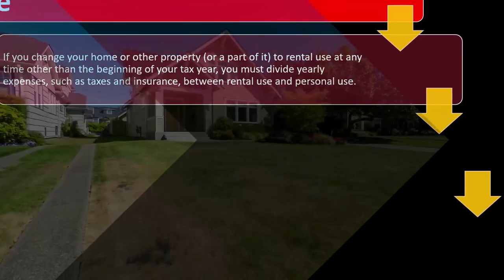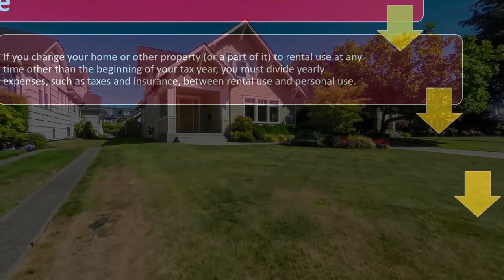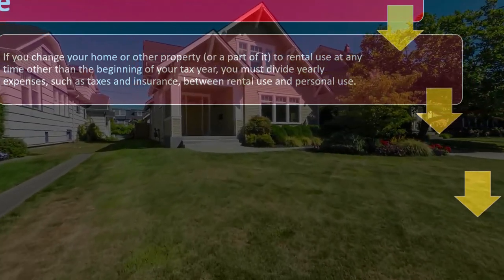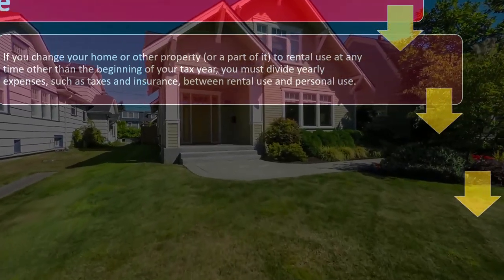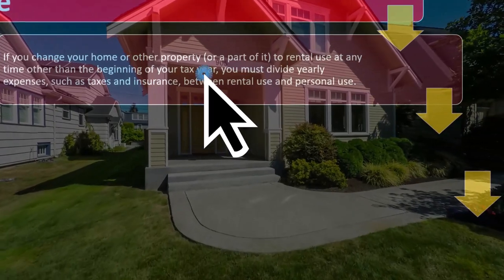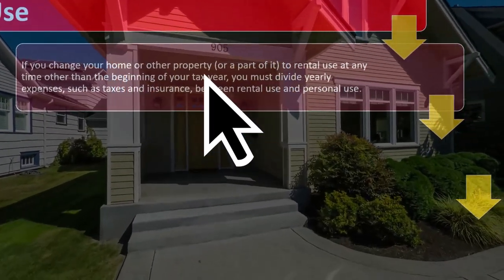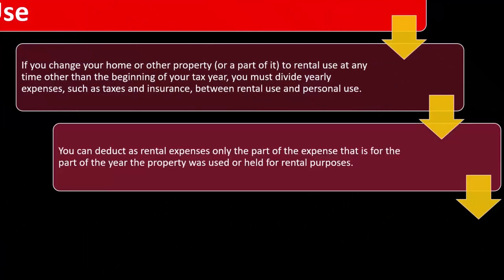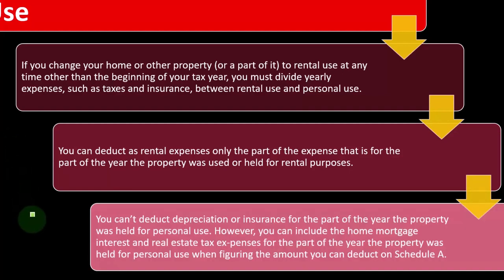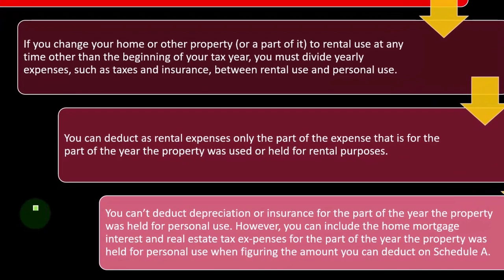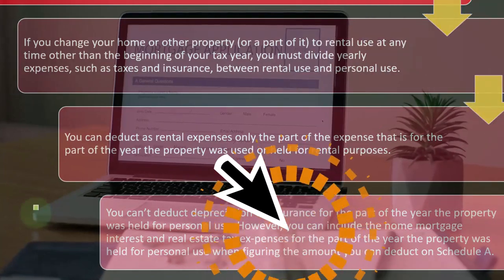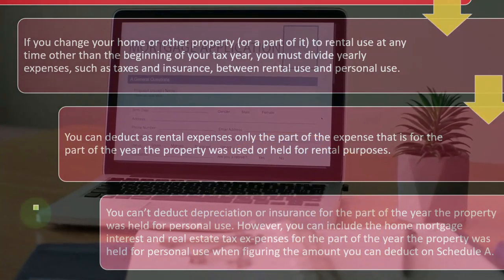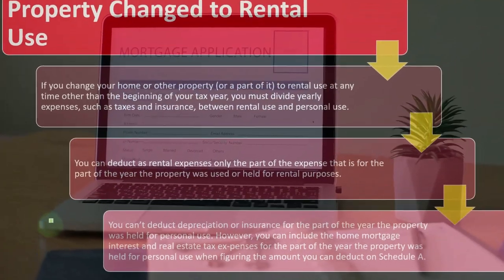If you change your home or other property to rental use at any time other than the beginning of your tax year, you must divide yearly expenses such as taxes and insurance between rental use and personal use. You can deduct as rental expenses only the part of the expenses for the part of the year the property was used for rental purposes. You cannot deduct depreciation or insurance for the part of the year the property was held for personal use. However, you can include home mortgage interest and real estate tax expenses for the personal-use portion when figuring the amount you can deduct on Schedule A.